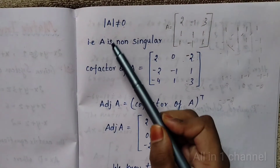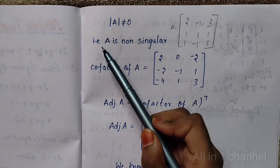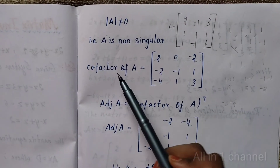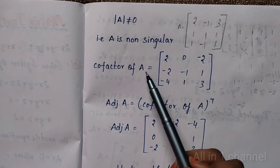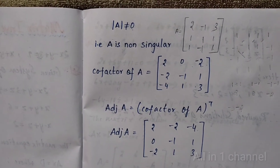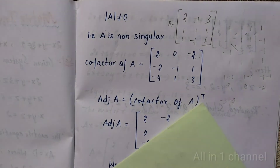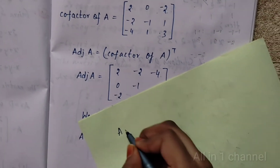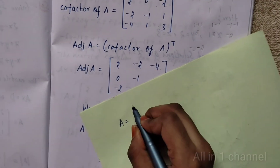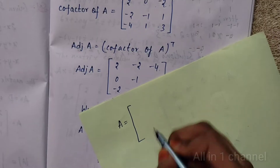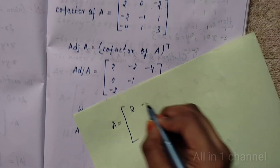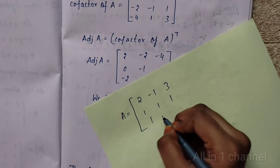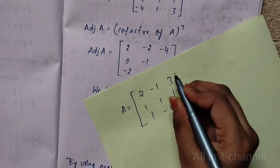Since det(A) is not equal to 0, A is non-singular. We have to find the cofactor of A. First write the A matrix: [2, -1, 3; 1, 1, 1; 1, -1, 1].